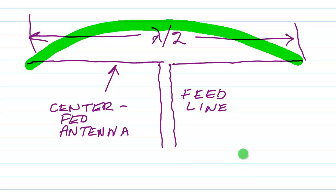For example, on the 7 MHz amateur band, this length is approximately 20 meters or 66 feet. On the 14 MHz amateur band, that length is about 10 meters or 33 feet.